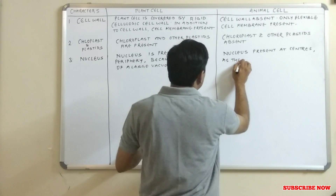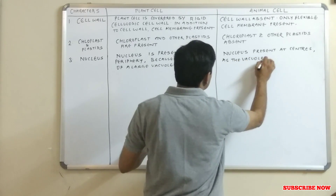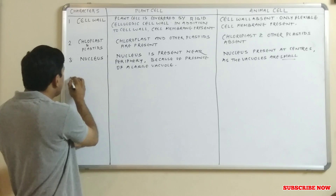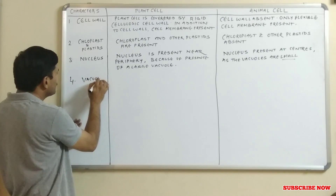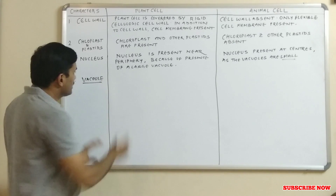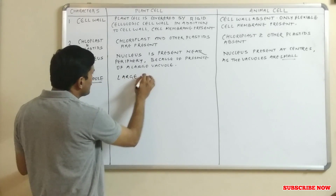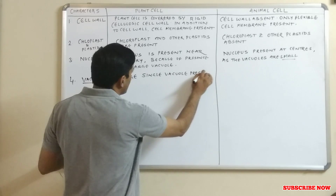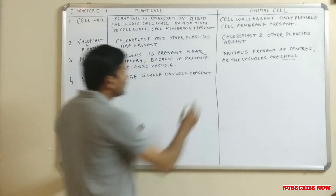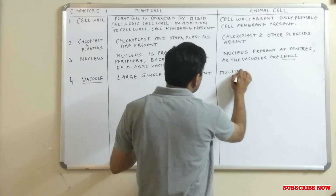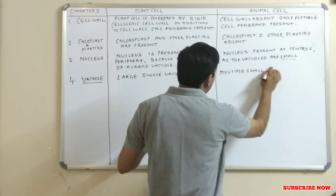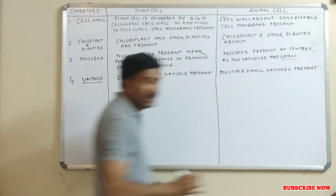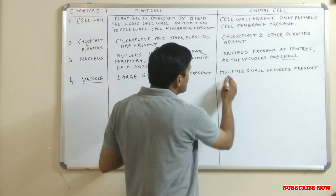In the animal cell, the nucleus is present at the center, because the vacuoles are small. This leads us to another point — the vacuole. In the plant cell, a large single vacuole is present, while in the animal cell, multiple small vacuoles are present.